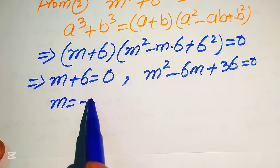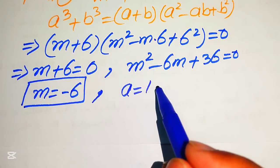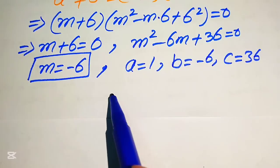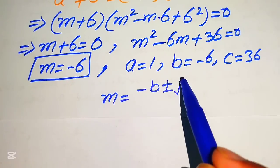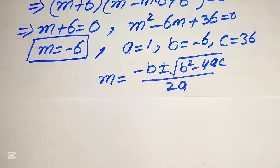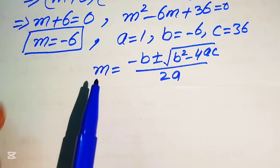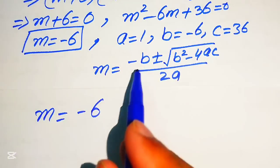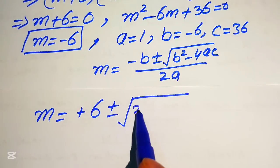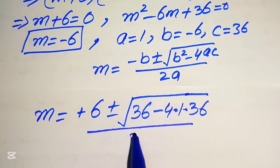From the first case we get the fourth root: m equals to minus 6. To find the remaining roots we apply the quadratic formula to m squared minus 6m plus 36 equals to 0. The coefficients are a equals 1, b equals minus 6, and c equals 36. The quadratic formula gives m equals minus b plus or minus square root of b squared minus 4ac, divided by 2a.